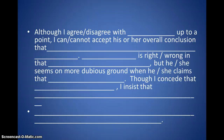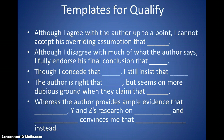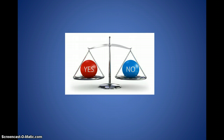Here is your template for qualifying. Although I agree or disagree with blank up to a point, I can or cannot accept his or her overall conclusion that. The author is right or wrong in that blank, but they seem on more dubious ground when they claim that blank. Though I concede that blank, I insist that. Although I disagree with the author up to a point, I cannot accept his overriding assumptions. Although I disagree with much of what the author says, I fully endorse his final conclusions that. The author is right that, but seems on more dubious ground when they claim that. Whereas the author provides ample evidence that blank, the author's research on blank convinces me instead. So you're going with the yes and the no — to what extent is it true and untrue, and to what extent do you agree and disagree? That would be to qualify.